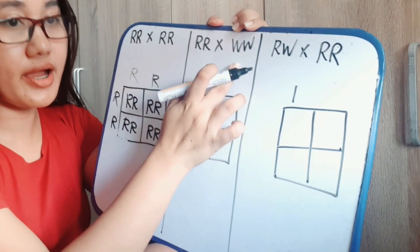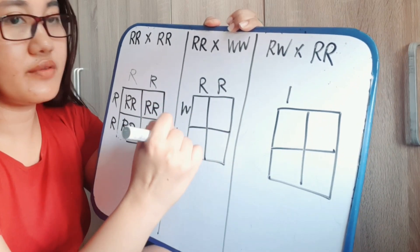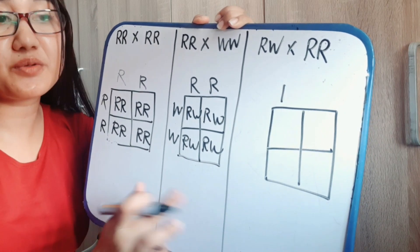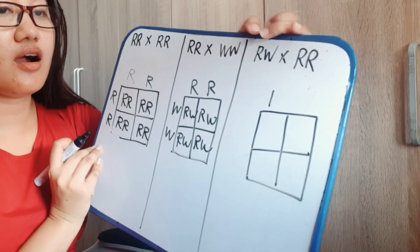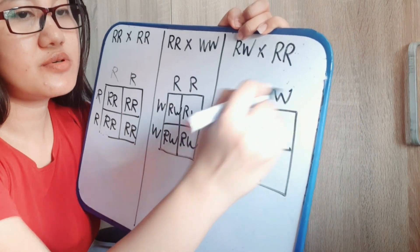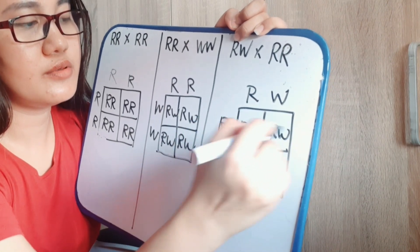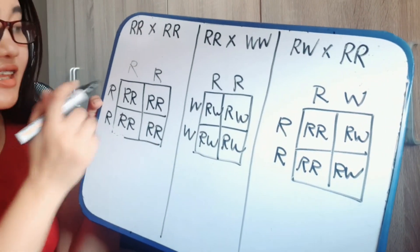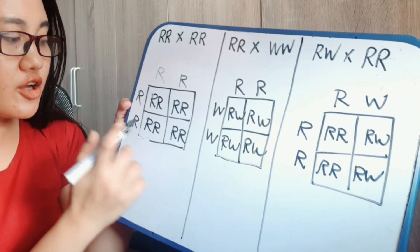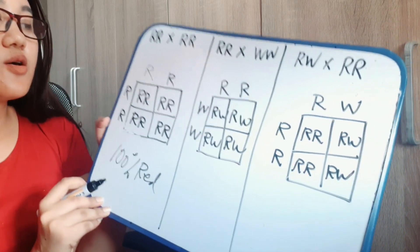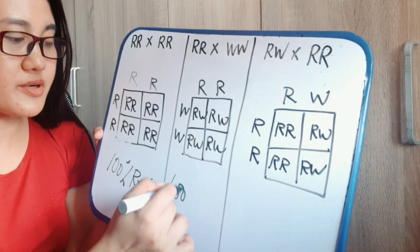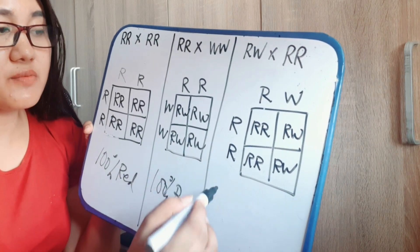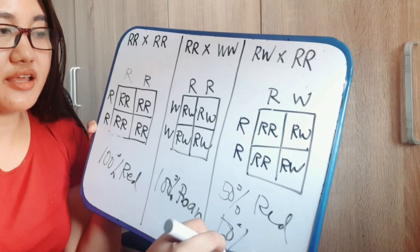For the second problem — red crossed with white — the result is 100% roan offspring. And for the third, roan (RW) crossed with red (RR) — the Punnett square gives RR, RW, RR, RW — which means 50% red and 50% roan.